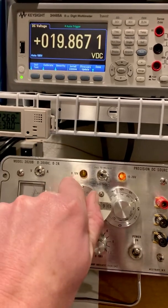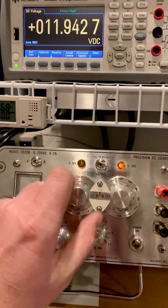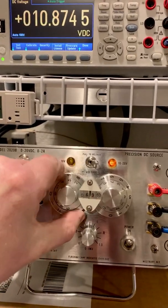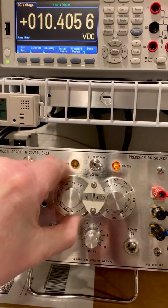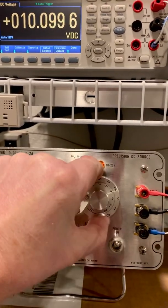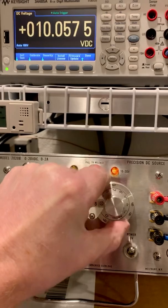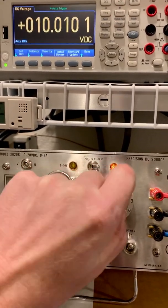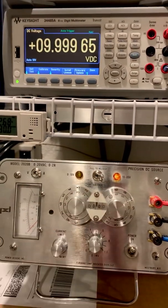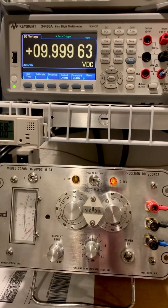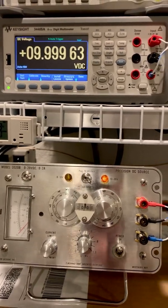We can also just back this all the way off to 0 on the four dials and it will give us 10 volts. 9.999, pretty close.